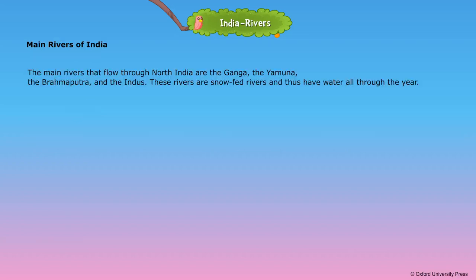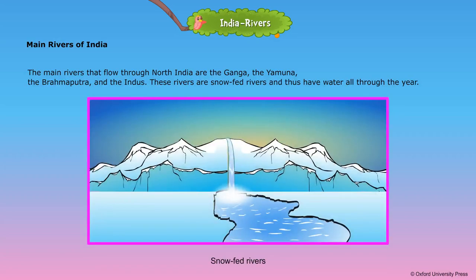Main Rivers of India. The main rivers that flow through North India are the Ganga, the Yamuna, the Brahmaputra, and the Indus. These rivers are snow-fed rivers and thus have water all through the year.